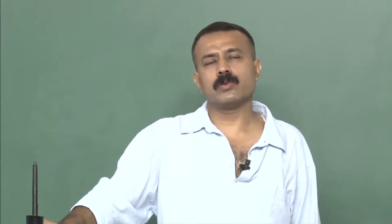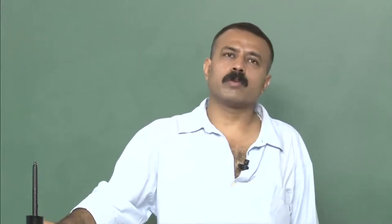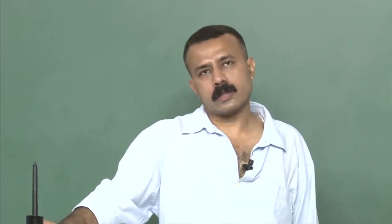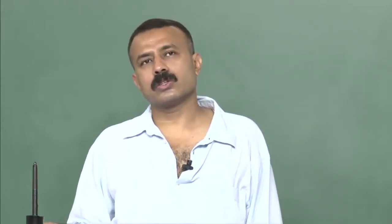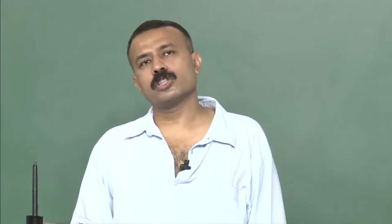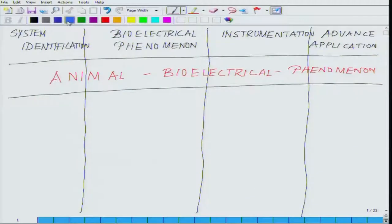The first question we will attempt to answer is the origin of bioelectrical phenomena — in other words, cellular electricity: how electricity is generated at the cellular level. That requires us to go in depth with the membrane structure, membrane potential, and the flow of charges across the membrane which leads to the generation of electricity. We will start by studying the membrane, so please keep this chart in mind at all times.